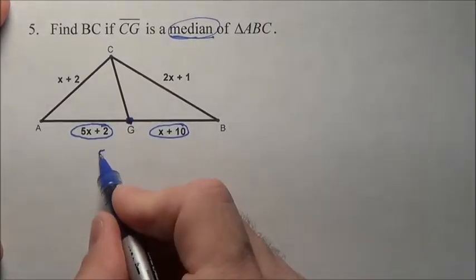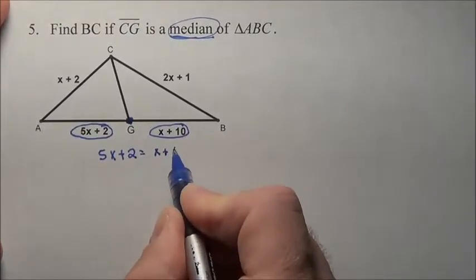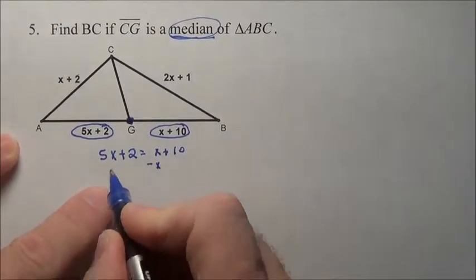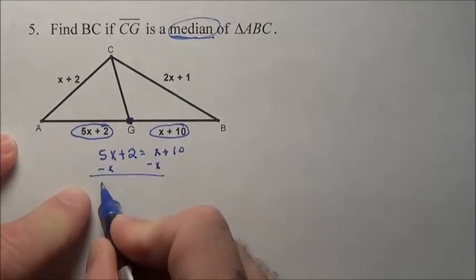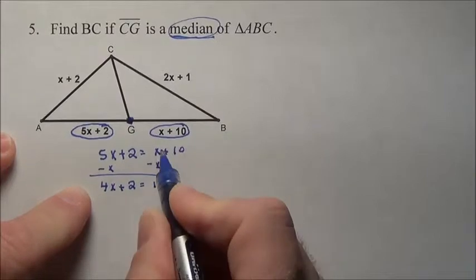So if they're the same, we always in math will set them equal to one another. Solving this, I subtract x, I get 4x plus 2 is equal to 10 because that goes away.